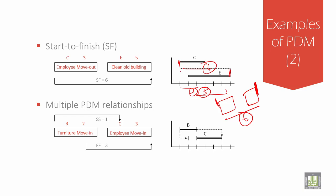Then multiple PDMs - you have both SS and FF, both start-to-start and finish-to-finish. Now we are here in the diagrammatic format. This shows about 1 and this shows about 3.